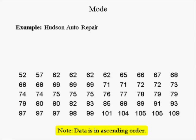The mode is the data value with the highest frequency. The data from our Hudson Auto Repair example is sorted, which makes finding the mode easier. Note there could be multiple modes, which are likely to be near the median and mean. The frequencies of 52 and 57 are both 1. All numbers between the minimum and maximum not in the data set — for example, 53, 54, 55, 56, and so on — have frequencies of 0. The frequency of 62 is 4.